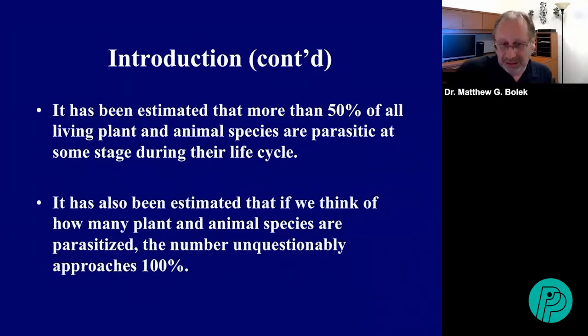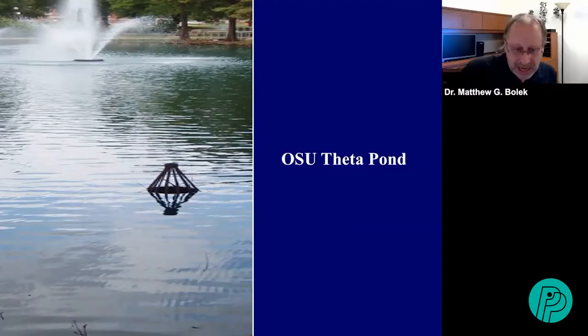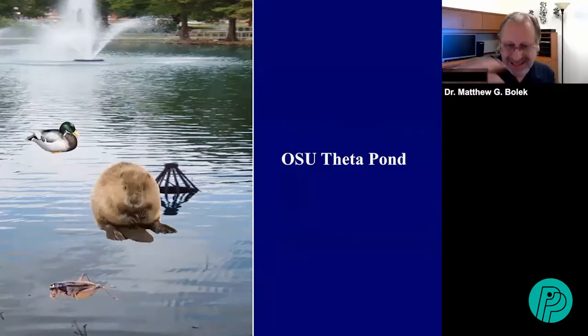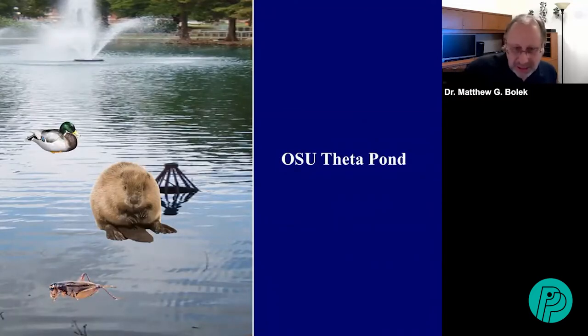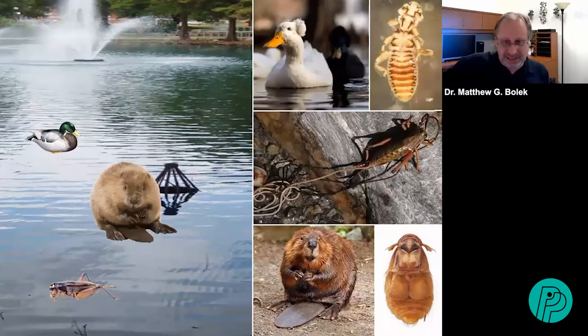Just as importantly, it has also been estimated that if we think of how many plant and animal species are parasitized, the number unquestionably approaches 100 percent. If we take a common pond — this is one at Oklahoma State University called Theta Pond — and you walk around that pond, you commonly see free-living animals such as crickets, ducks swimming around, and sometimes even the occasional beaver. When all of those animals are examined for parasites, they all have very specific parasites that live in or on them.